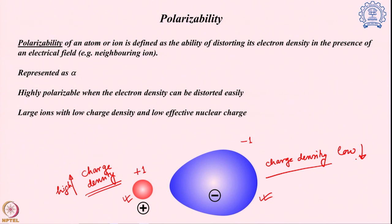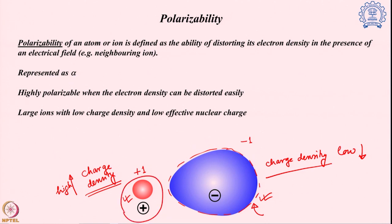The charge density — which shows how much charge exists in the system per unit volume — is quite high for the small red cation because it has plus 1 charge in a very small space. At the same time, the charge density for the blue anion is pretty low. This anion is large, so the electron density is spread out, giving it a low charge density. The presence of a strong electric field from the neighboring cation distorts that electron density, since the electrons around the anion are loosely held and not strongly controlled by the nucleus.